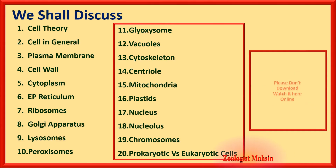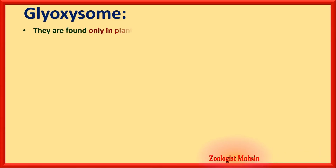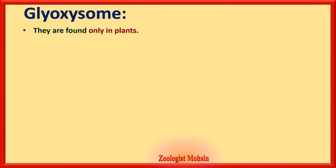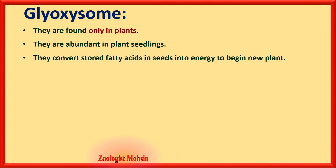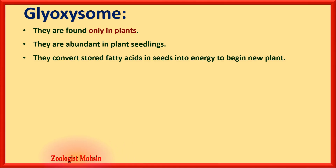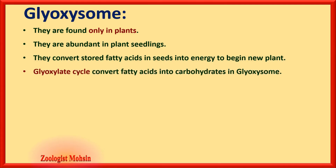Glyoxysomes are found only in plants. Remember that glyoxysomes are among those organelles which are only present in plants. They are abundant in plant seedlings — those plants which have just started growth from seeds. They convert stored fatty acids in seeds into energy to begin new plant growth. The glyoxylate cycle is very important: it converts fatty acids into carbohydrates inside the glyoxysome.